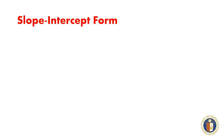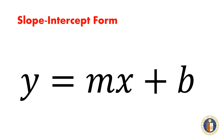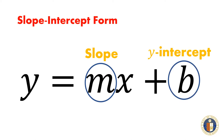There are many ways of writing linear equations, but we focus on the slope-intercept form y equals mx plus b, where m is the slope and b is the y-intercept.